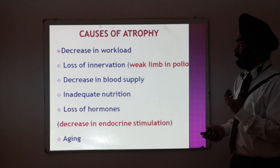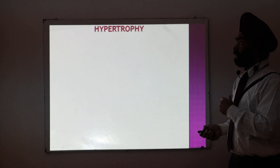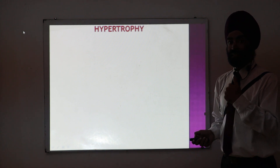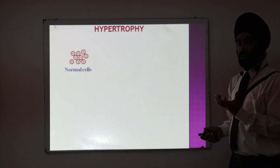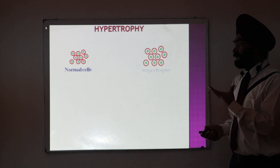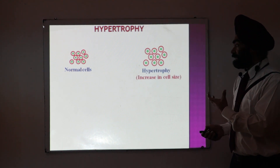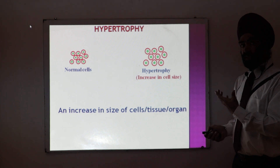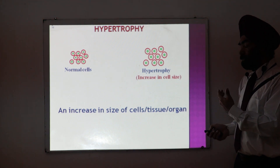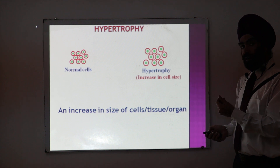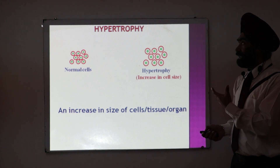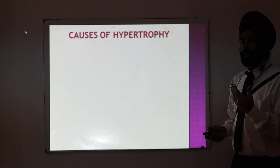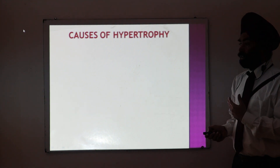The opposite kind of cell adaptation is called hypertrophy. 'Hyper' means excess — so if a normal cell increases in size, that means if a cell, tissue, or organ increases in size, that is called hypertrophy.